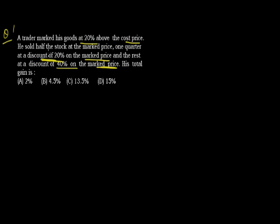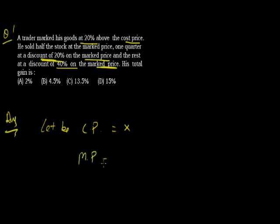There are several ways to solve this problem. Let me discuss the shortest way. See carefully how we formulate the equations. Let the cost price be X. Therefore the market price, which is 20% above the cost price, would be X into (1 + 0.20), that is 1.20X.